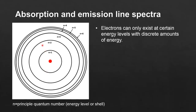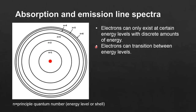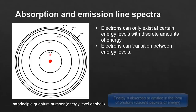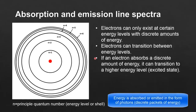So an electron can occupy energy level 1 or energy level 2, but not in between energy level 1 and 2. The next point is that electrons can transition between energy levels, so that means an electron can transition from n equals 1 to n equals 2, or from n equals 3 down to n equals 1.